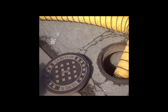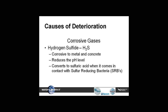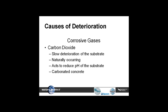Some of the corrosive gases we come across are obviously hydrogen sulfide. It's corrosive to metal and concrete, reduces the pH level, and converts to sulfuric acid when it comes in contact with sulfur-reducing bacteria. Another gas is carbon dioxide, which causes slow deterioration of the substrate. It's naturally occurring and acts to reduce the pH of the substrate, leading to carbonated concrete.